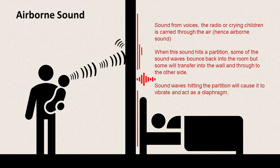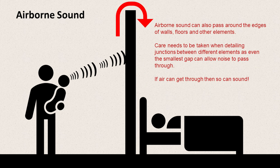If we look at airborne sound — sound from voices, the radio, crying children — it is carried through the air. When the sound hits a partition, some of the sound waves bounce back into the room, but some of it will transfer into the wall and through to the other side. The sound waves hitting the partition cause it to vibrate and act as a diaphragm. Airborne sound can also pass around the edges of walls and floors, so care needs to be taken when detailing these junctions, as even the smallest gap can allow noise to pass through.